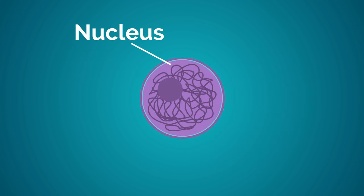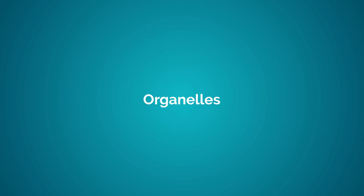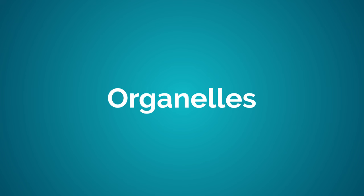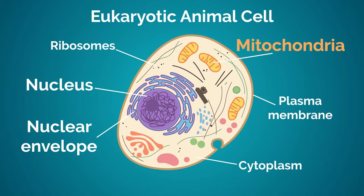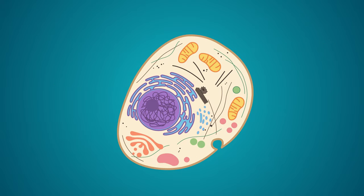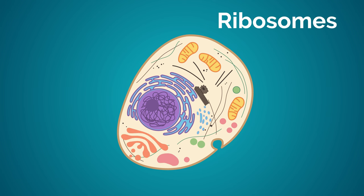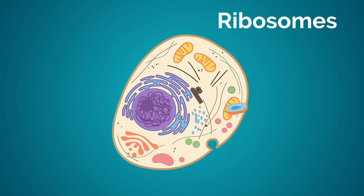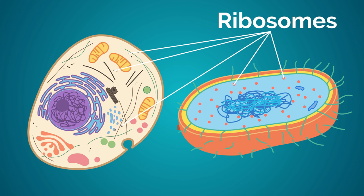The nucleus is a key factor in identifying whether a cell is prokaryotic or eukaryotic, but the other organelles are too. Organelles are tiny structures within the cytoplasm that perform specific jobs, like the energy-providing mitochondria in the animal cell. Eukaryotic cells contain lots of different organelles, whereas ribosomes are the only organelles found in prokaryotic cells.